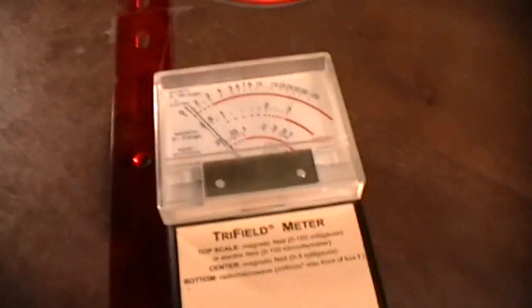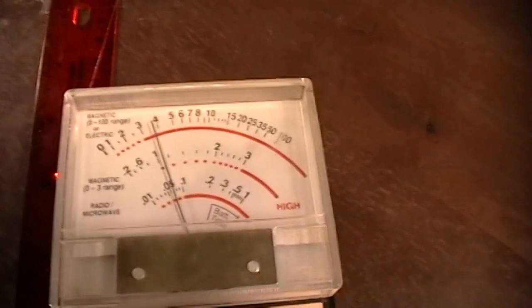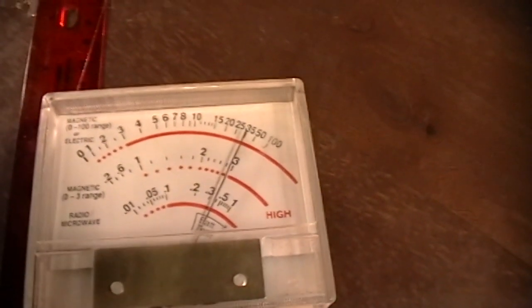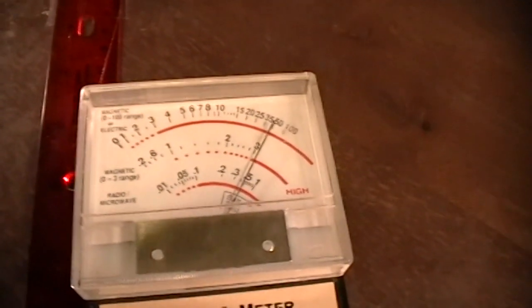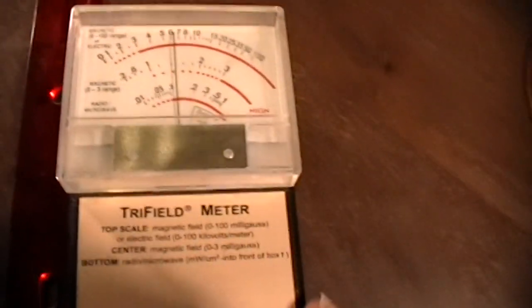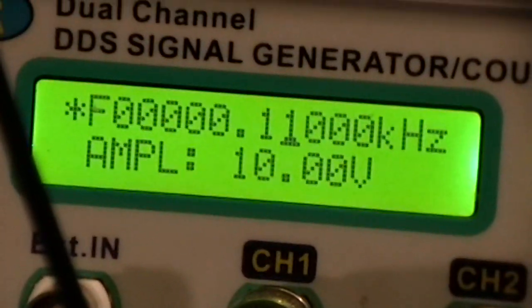Now I will start turning the frequency knob on the function generator. That's 30 hertz, 40 hertz, 50 hertz, 60 hertz right there. That pegs it at the three. But if I go higher, 70, 80, 90. Now we have to switch over to the 100 milligauss range. And that's the top scale. So we have about 60, a little over 60 milligauss now at 110 hertz.